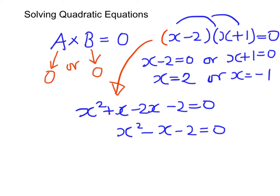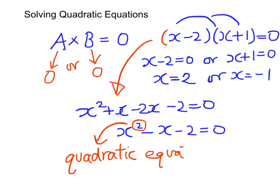Now we have an equation x squared minus x minus two equals zero. This equation is rather different from the linear equations we came across in form one and form two, because we have a square term here — the square of x. This equation is signified by the highest power, the greatest power of two, and therefore we call this a quadratic equation.